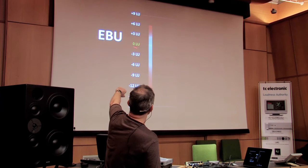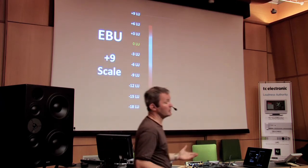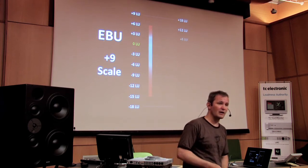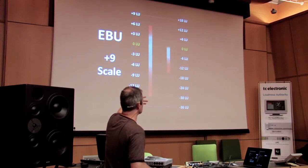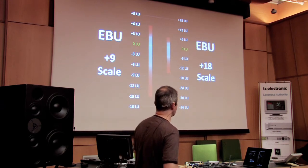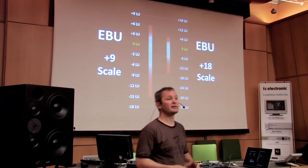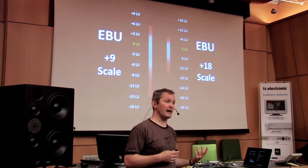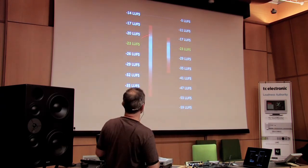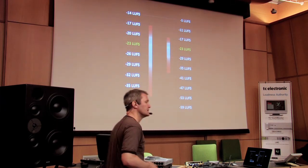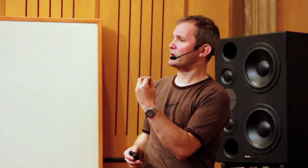This is the scale where we have 9 LU above zero, called the EBU plus 9 scale. For more dynamic material we have another one that's just double the range, called the EBU plus 18 scale. And of course we also want to see absolute values, so you have to be able to switch to absolute mode, where you have minus 23 LUFS. But the power of zero is a big one — especially for inexperienced operators, we will have the zero.